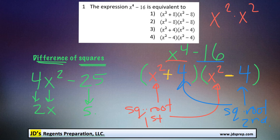But in the end, the answer to this question is x squared plus 4 times x squared minus 4. So that's our answer right there. So I hope that was helpful, and thank you for visiting JD's Regents Preparation.